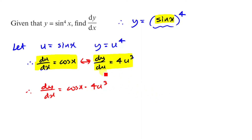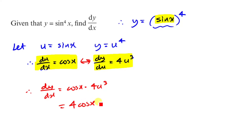Now we know what u is, so we have to put everything in terms of x. Since u is sin x, we can say the final answer is 4 cos x times sin to the power of 3 of x. And that's it — that's literally the chain rule done.